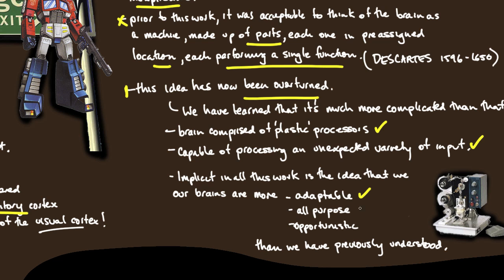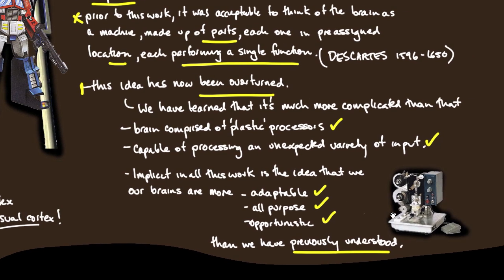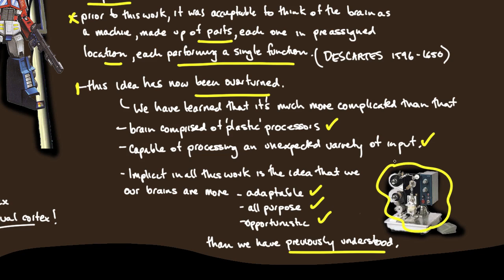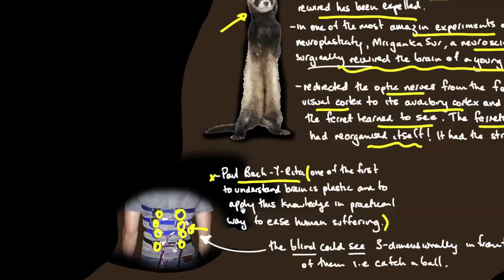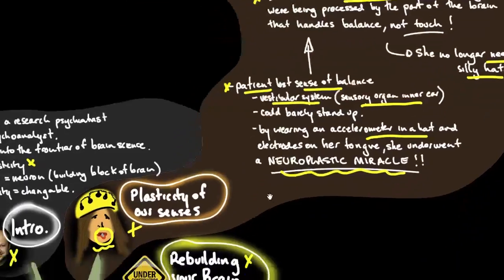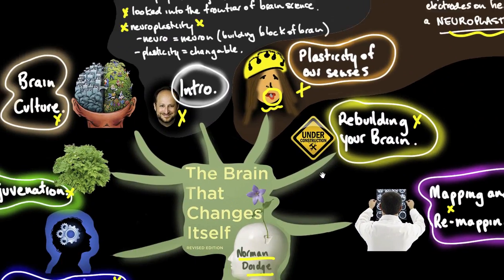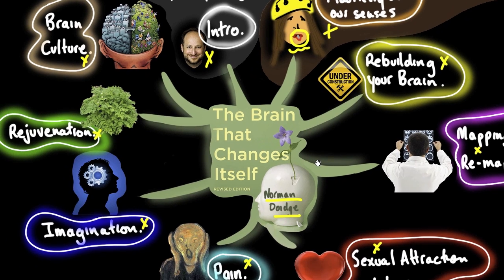Implicit in all this work is that our brains are more adaptable, all-purpose, and opportunistic than previously understood. No longer a set of unchangeable cogs, but a very fluid organ, which in many ways is the most dynamic and exciting frontier of physiology we have.